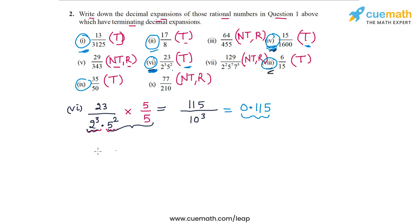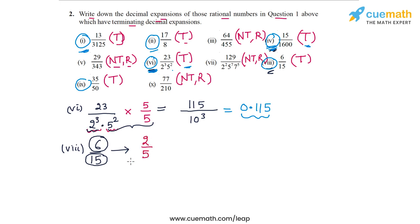Let's go to the next number which is 6 by 15, from part 8. As I noted in question 1, we first need to reduce it to its lowest form because the factor of 3 in the denominator also occurs in the numerator. Reducing to lowest form gives us 2 by 5, which has a terminating decimal expansion. Multiplying above and below by 2 to make the 5 into a 10 gives 4 by 10, or 0.4. So 0.4 is the terminating decimal expansion of 6 by 15.